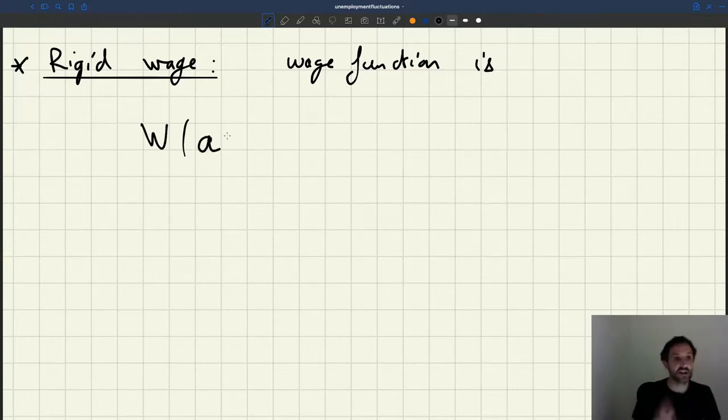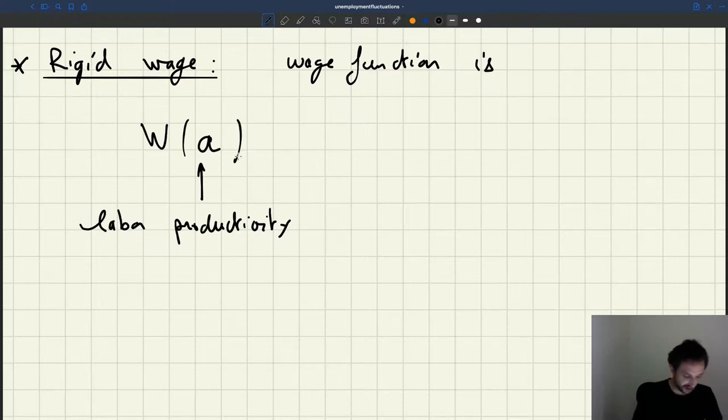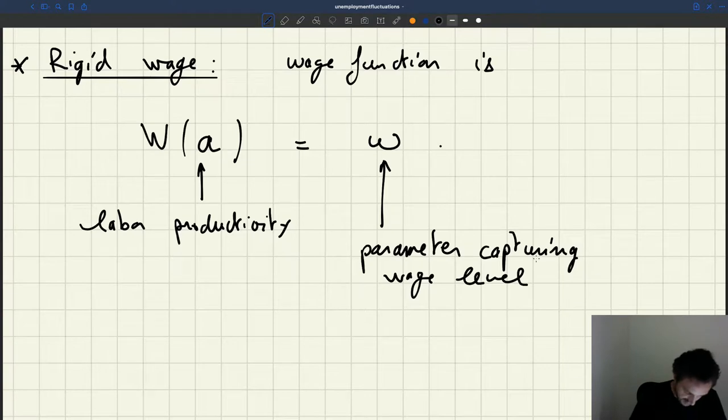So we're going to take that into account. So we'll have a wedge that depends on this technology parameter in the production function, which captures the productivity of the worker. So if you want, that captures labor productivity. So we'll have a wedge that depends on that labor productivity, which is a parameter. And the simplest form we can imagine would be to have omega here. So that's just a parameter, it's just a wage parameter, a parameter that captures the wage level, times A, which is our productivity, with an exponent gamma.